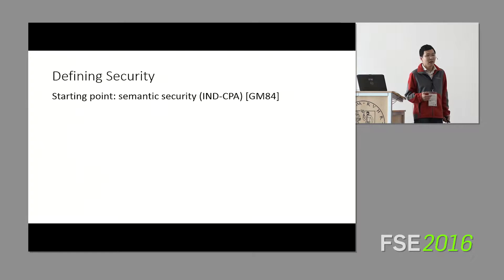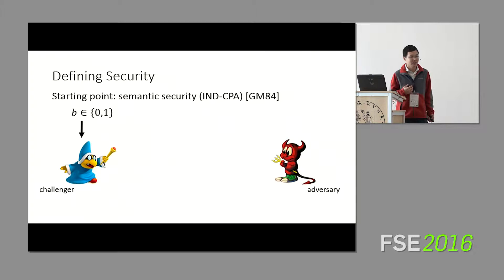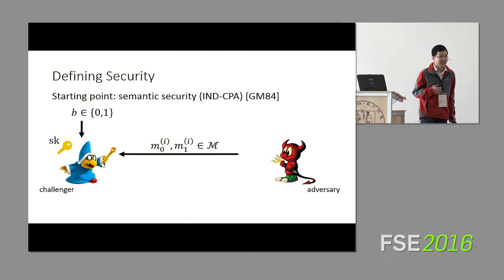The starting point, as one might imagine, is the notion of semantic security by Goldwasser and Micali from 1984. This is a game-based definition between a challenger and an adversary. The challenger is given a bit 0 or 1 that is trying to distinguish. These are going to parametrize two different worlds. At the beginning of the game, the challenger will sample a secret key for their encryption scheme. And the adversary can now make queries, chosen message queries. It submits two messages, M0 and M1, to the challenger drawn from the message space of the adversary's choosing.